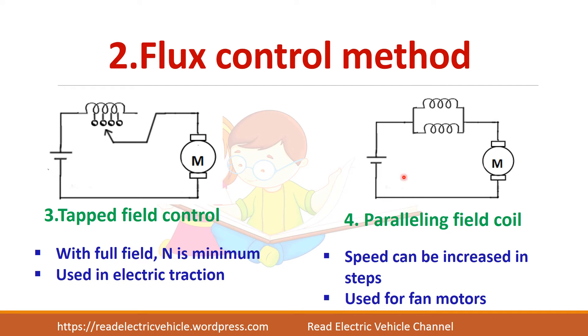This type of field control will be used in electric traction. Next we have paralleling field coils — that is, you can connect two or three coils in series and some of them in parallel. By using this, you are able to divide the current and the speed can be increased in steps. This type of paralleling field coils is used for fan motors.